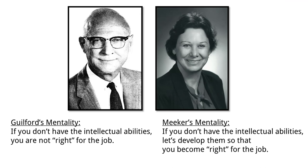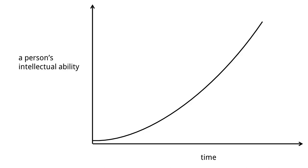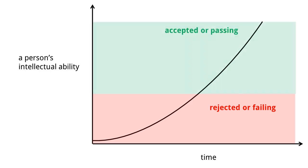This is great for the employer or association in charge, but it isn't great for the student or the person who is applying and wants the job. What about somebody who wants to become a pilot or do a certain job and they're being rejected because they don't have the intellectual abilities yet? Mary Meeker's mentality was different. She believed: if you don't have the intellectual abilities, let's develop them so that you become right for the job. Mary Meeker believed that a person's intellectual ability could rise over time — it could actually get better, stronger, and more developed as time passed.